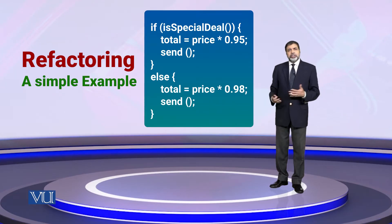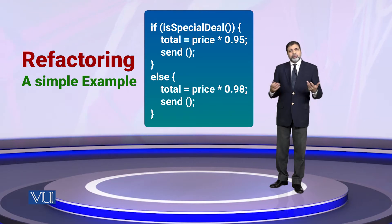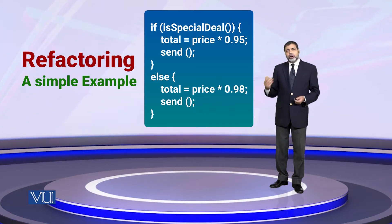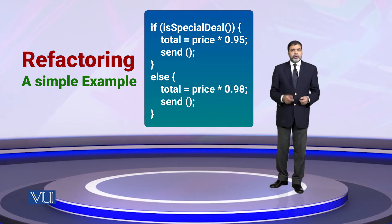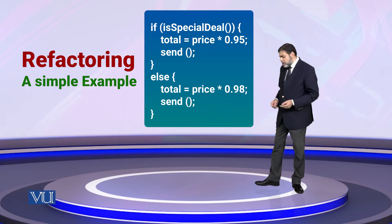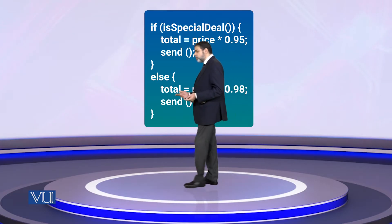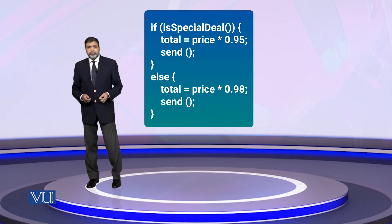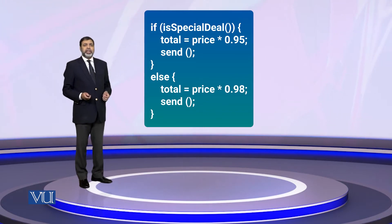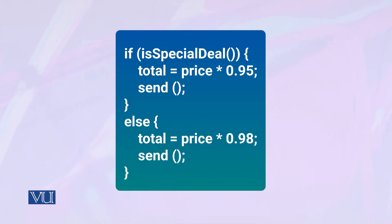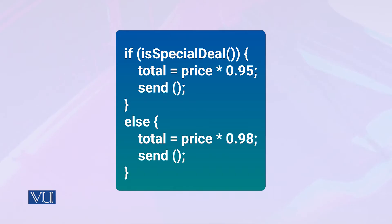If there is no special deal, then it will be 98% — a 2% discount. So if there is a special deal you get 5% off, otherwise 2% off. There are two statements: one in the main clause and one in the else clause. Both calculate a total.